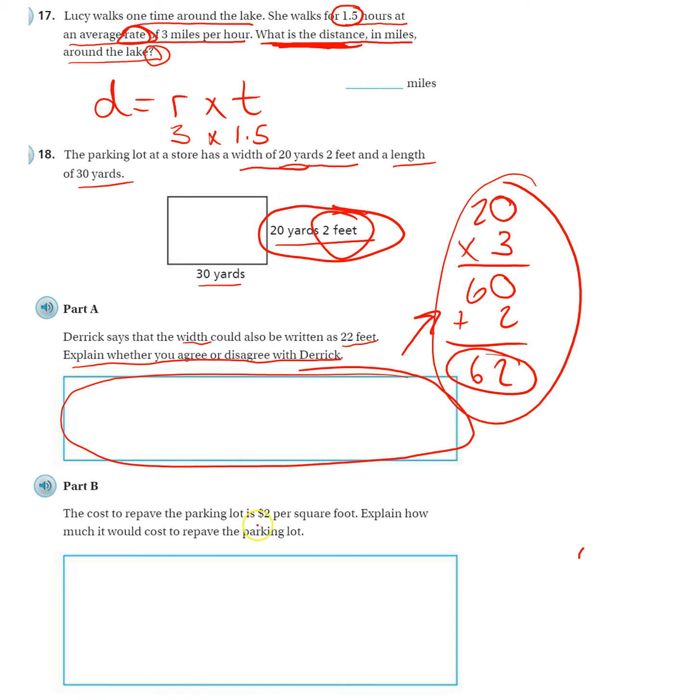Part B. The cost to repave the parking lot is $2 per square foot. Explain how much it would cost to repave the parking lot. Okay, so you want to change both of these to feet, and then multiply.